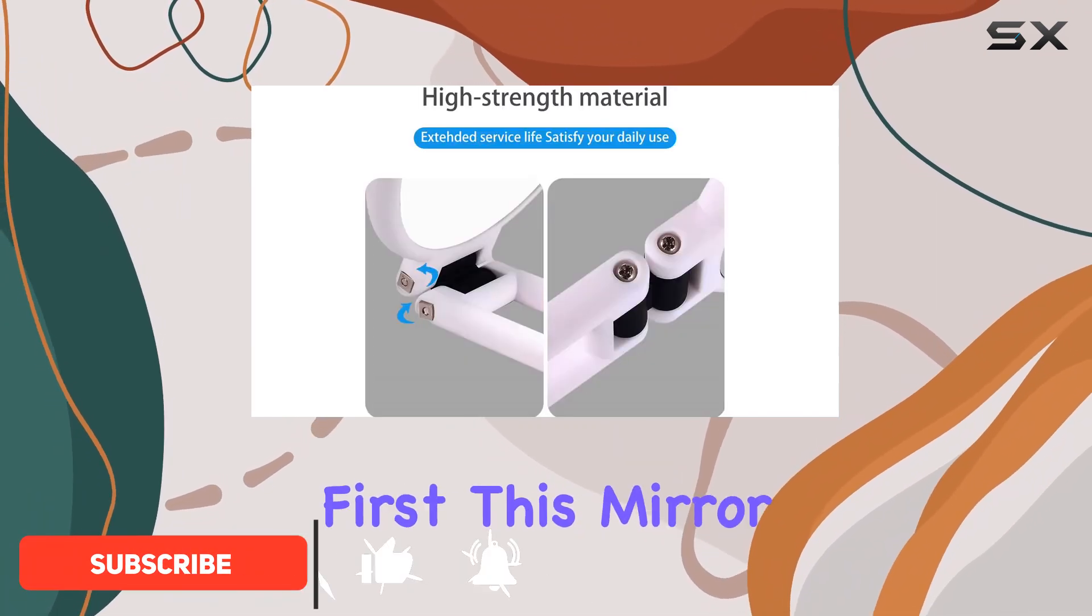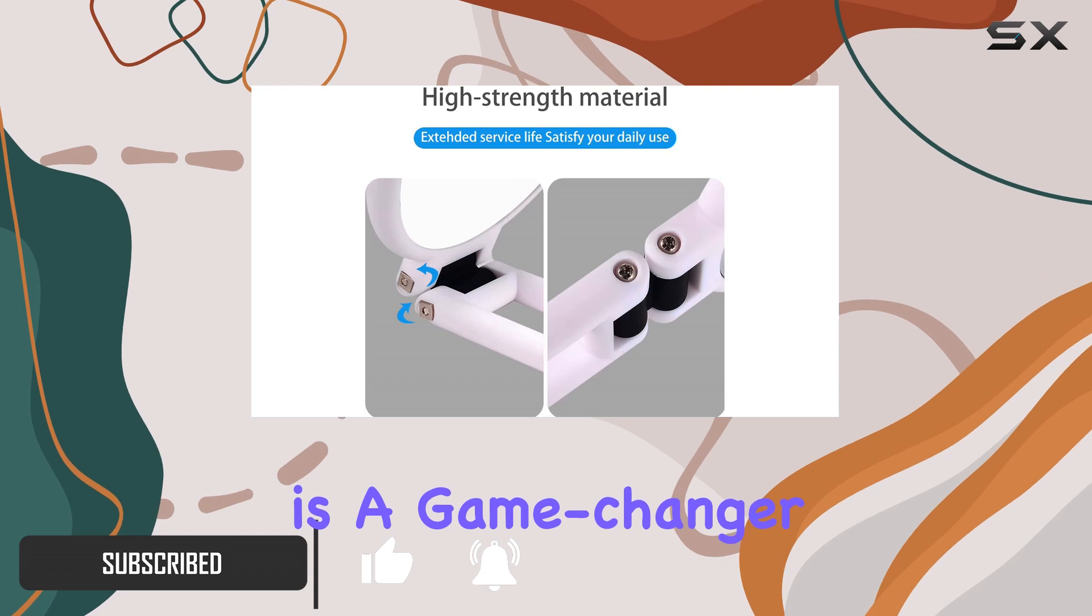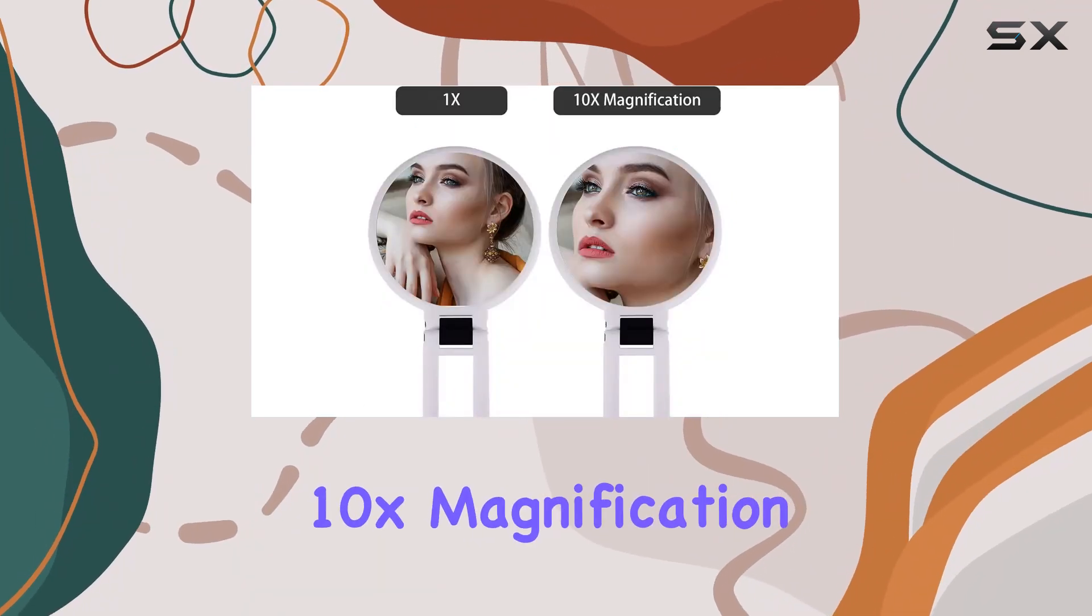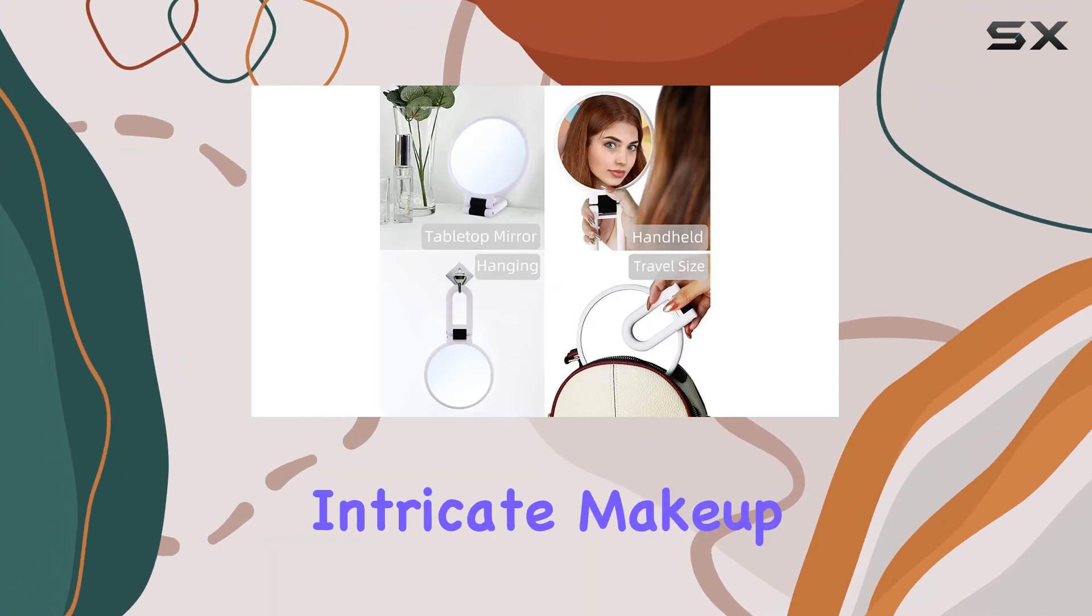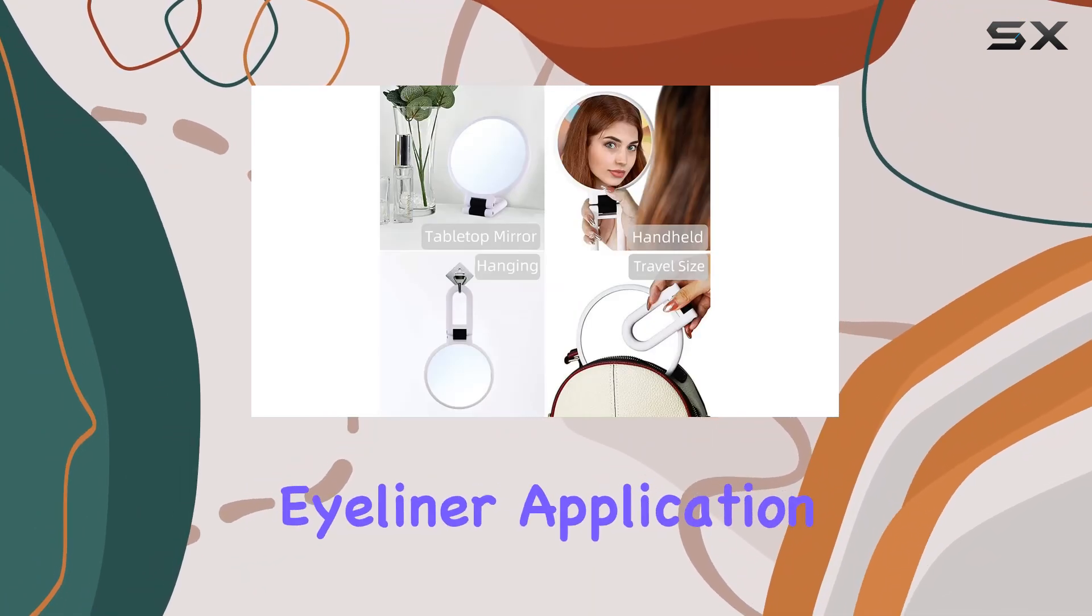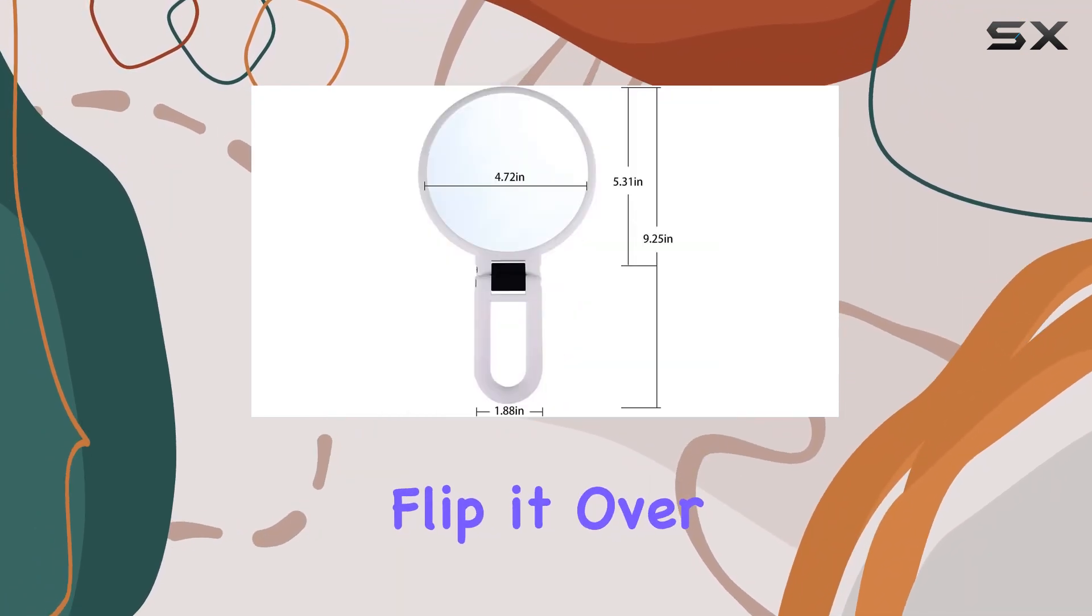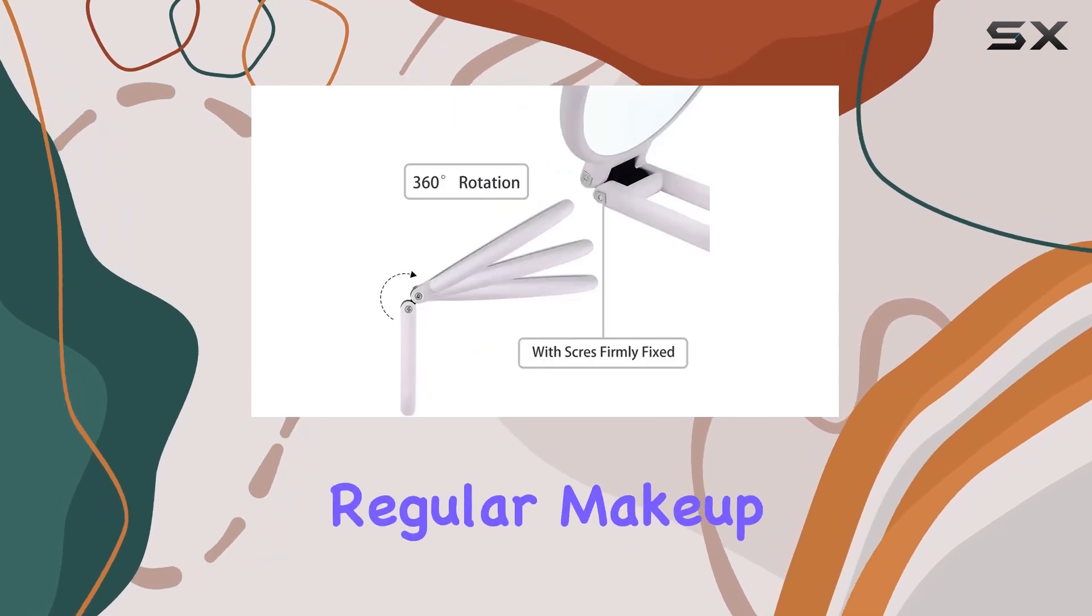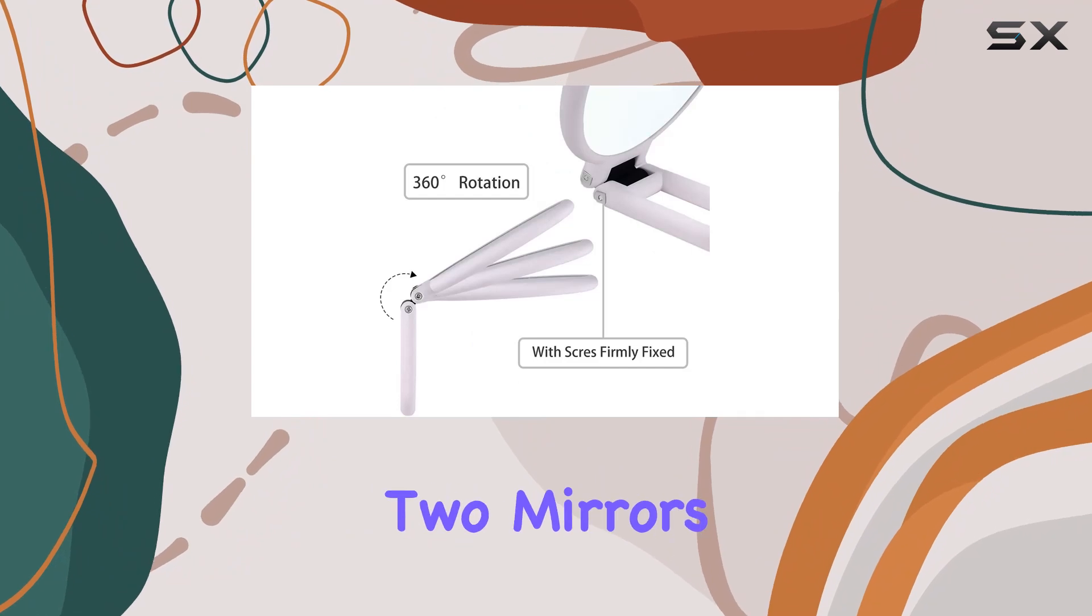Let's talk about functionality first. This mirror is a game-changer with its double-sided design. One side offers a whopping 10X magnification, perfect for intricate makeup tasks like precise eyeliner application or brow grooming. Flip it over, and you've got a crystal clear, high-definition mirror for your regular makeup routine. It's like having two mirrors in one.